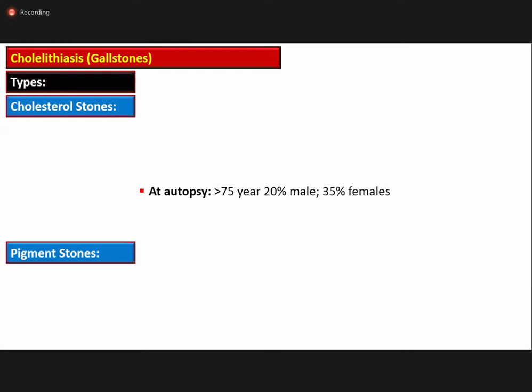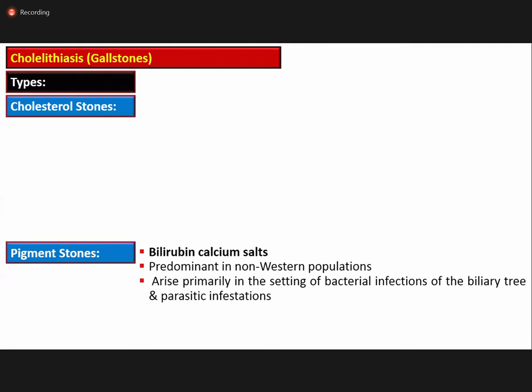Pigment stones are rare in these Native American populations. At autopsy for individuals over 75 years old, stones were found in 20 percent of males and 35 percent of females. Pigment stones contain bilirubin and calcium salts and are predominant in non-western populations, arising predominantly in the setting of bacterial infection of the biliary tree and parasitic infestation.